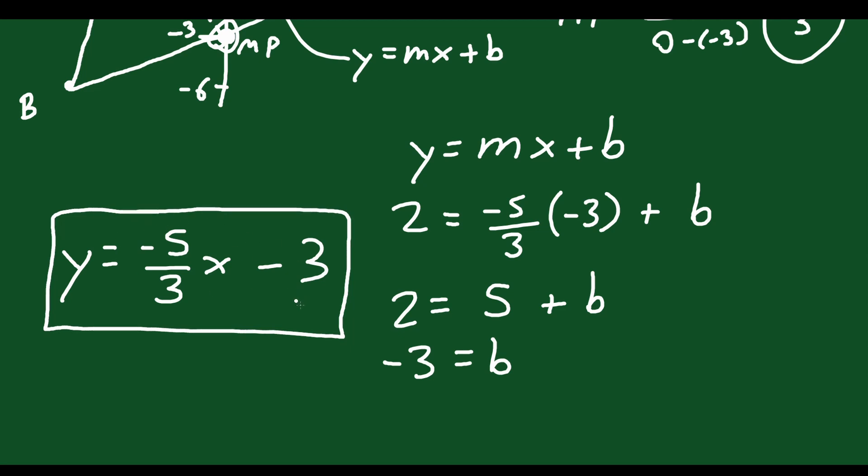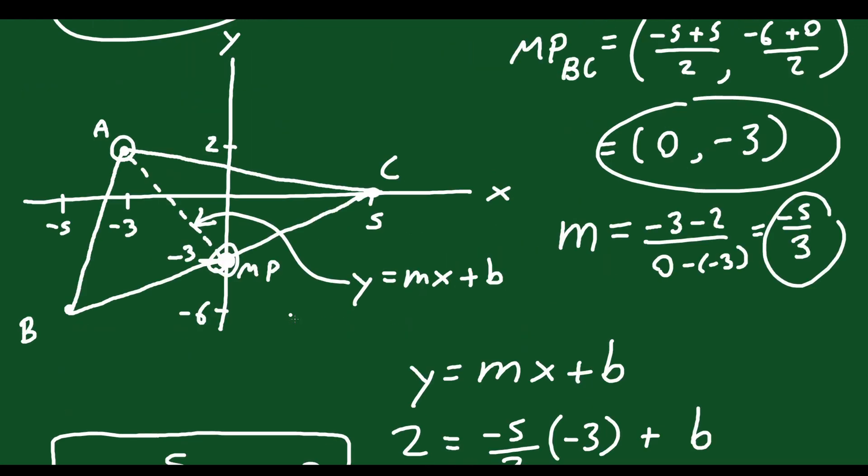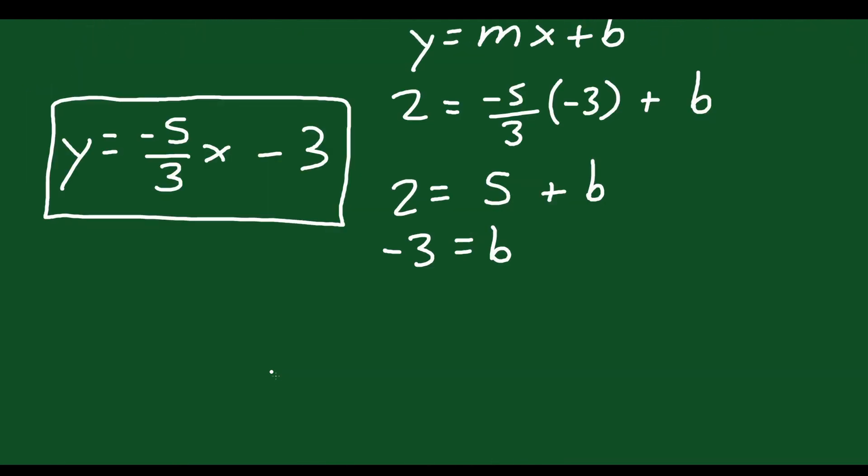Therefore, your final answer is y equals -5/3 x - 3. So this is the equation of the median from vertex A. And they could ask you to find the equation of the median from any point. You could find it from B, and that would go from B to the midpoint of AC. You could find the median from the vertex of C, and that would go from C to the midpoint of AB. So it all depends what they're asking. So that's why we have to read the question carefully to give them the answer they want.